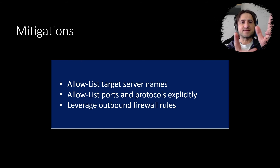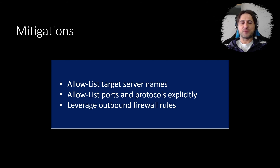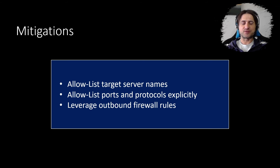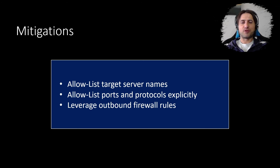Let's talk about mitigations. Three high-level things come to mind: always have an allow list for servers to connect to; similarly, always have an allow list of ports to connect to and explicitly define ports and protocols; and leverage outbound firewall rules to block or mitigate any unwanted outbound connections.